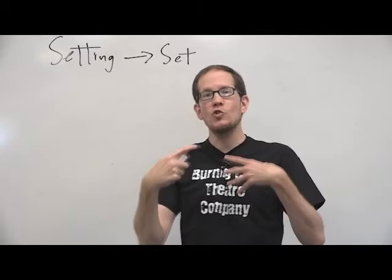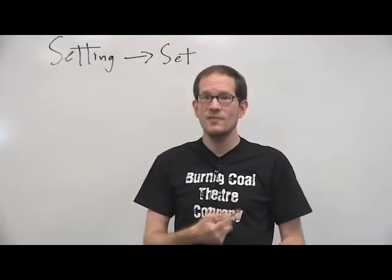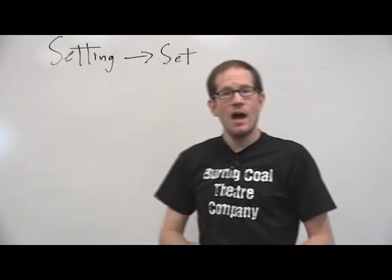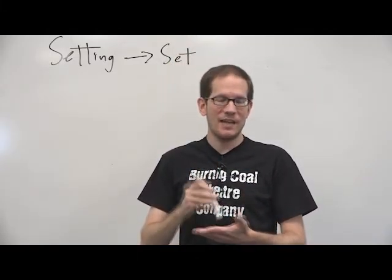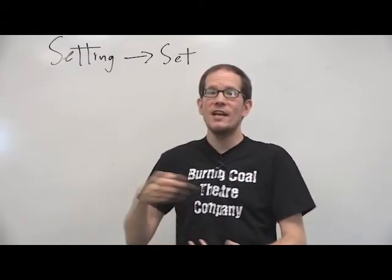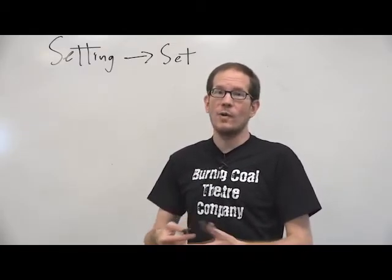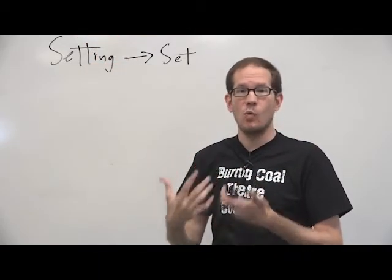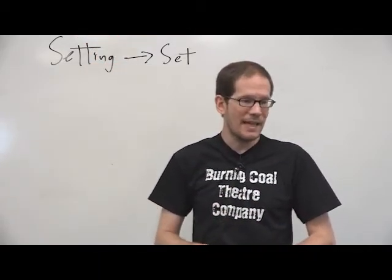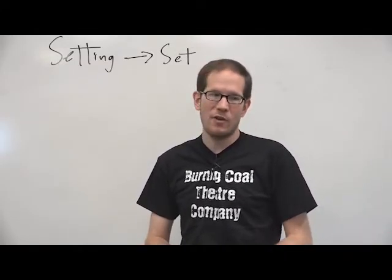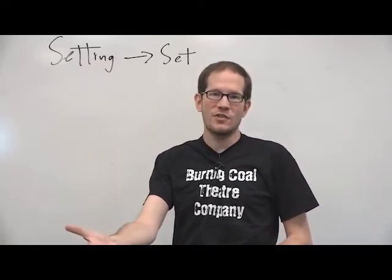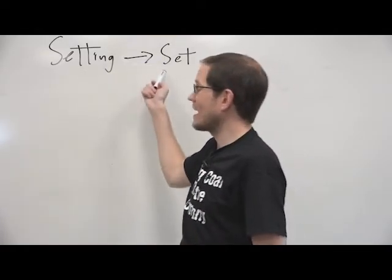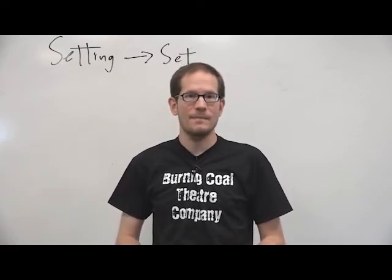You always want to start that play with either a description of the setting or description of the set. And every time you go to a new location, if your play has multiple scenes in it, you want to start with a description of that new setting or that new set so that we know exactly where it's taking place. If it's not on the page, it's not on the stage. So unless you tell us what's there, the actors and the directors won't know. If it's important that there be a gun over the mantelpiece, or a bowl of red cherries sitting on the kitchen table, you want to make sure that is made clear in the setting or set block at the beginning. Thanks.